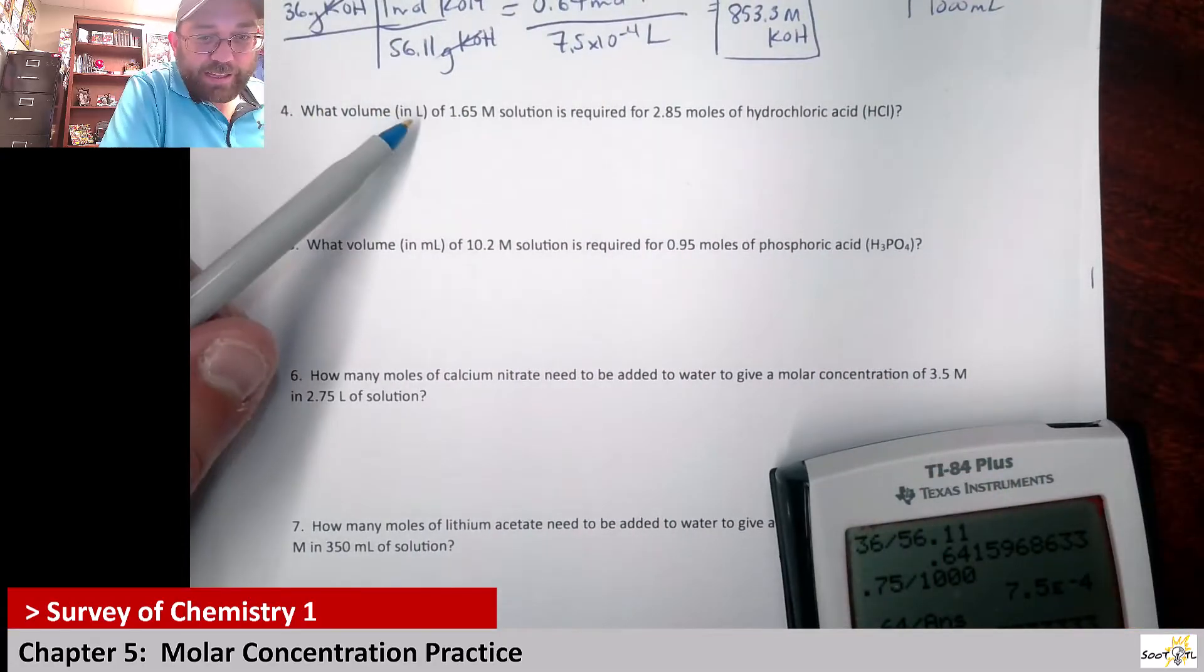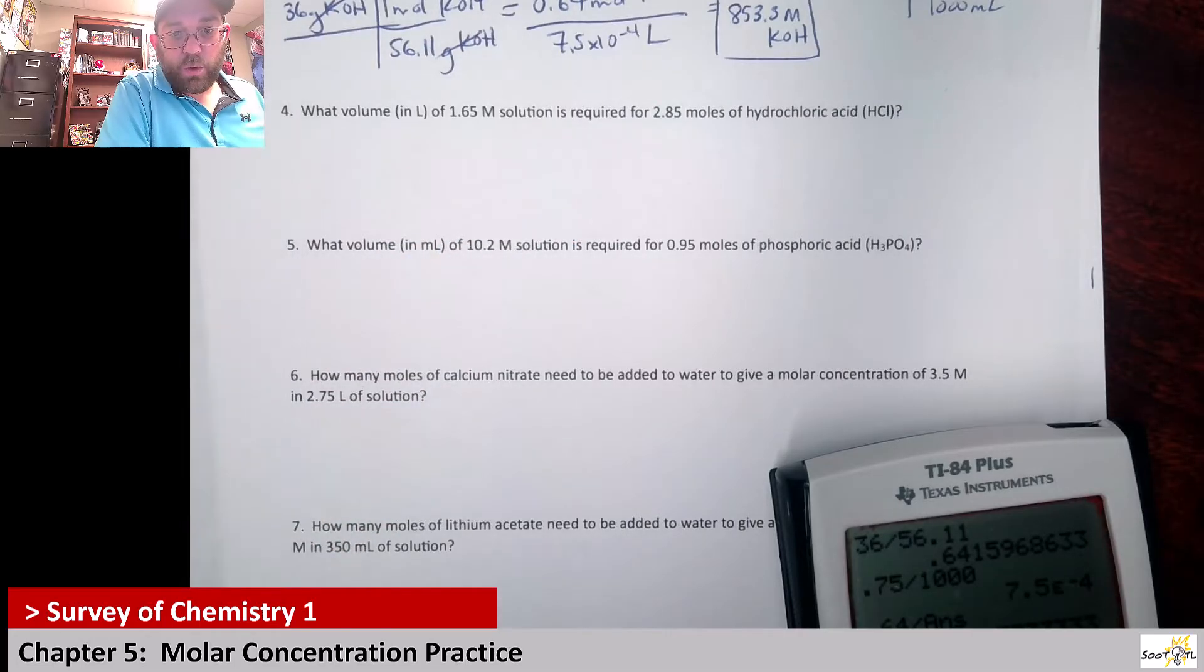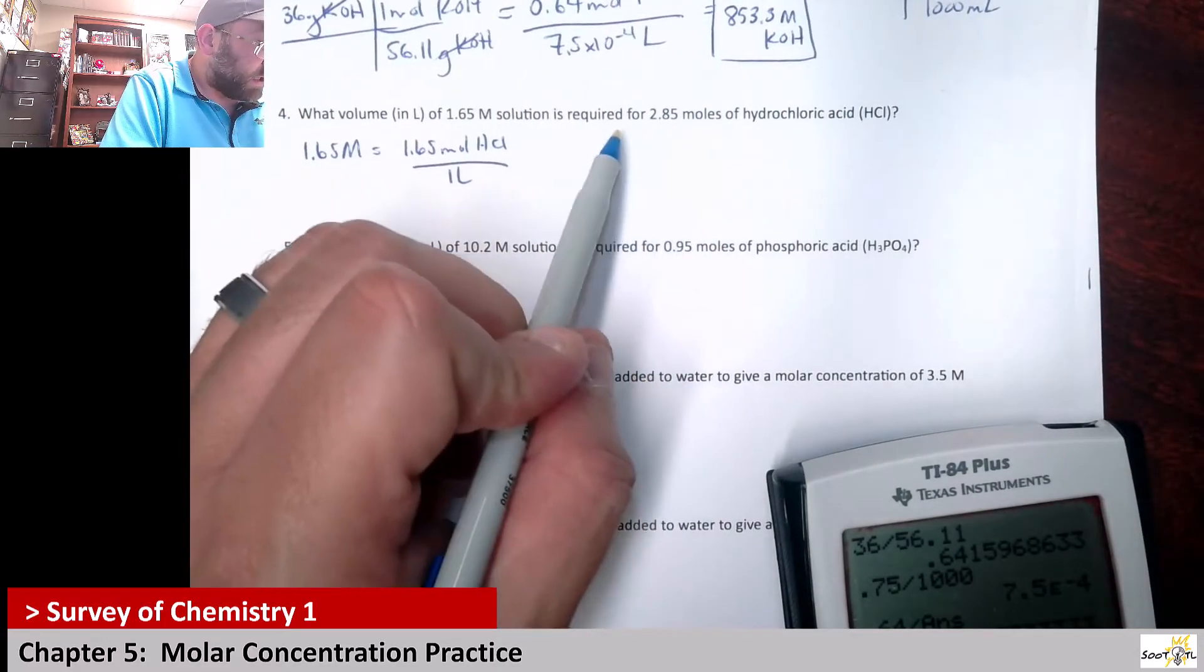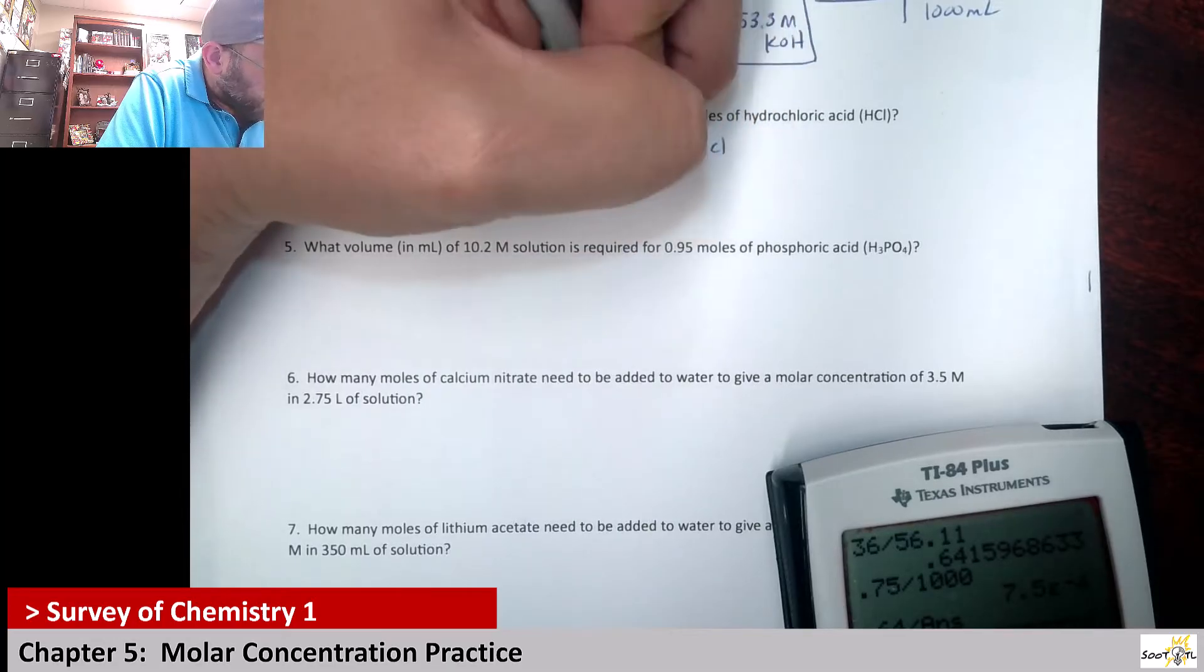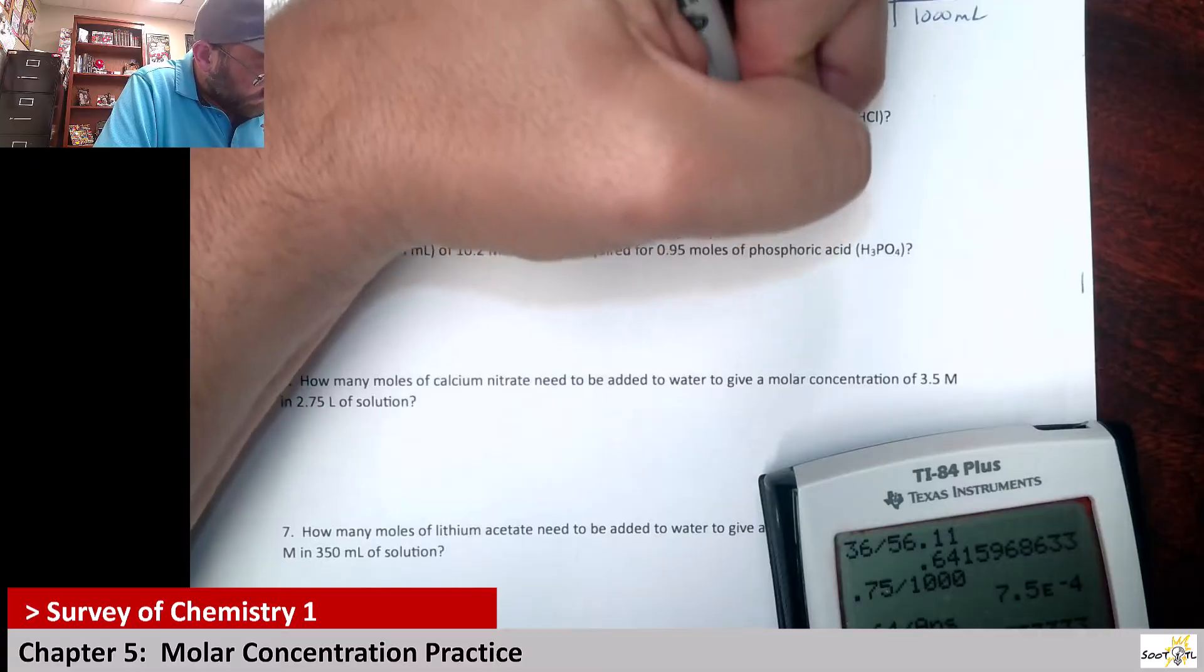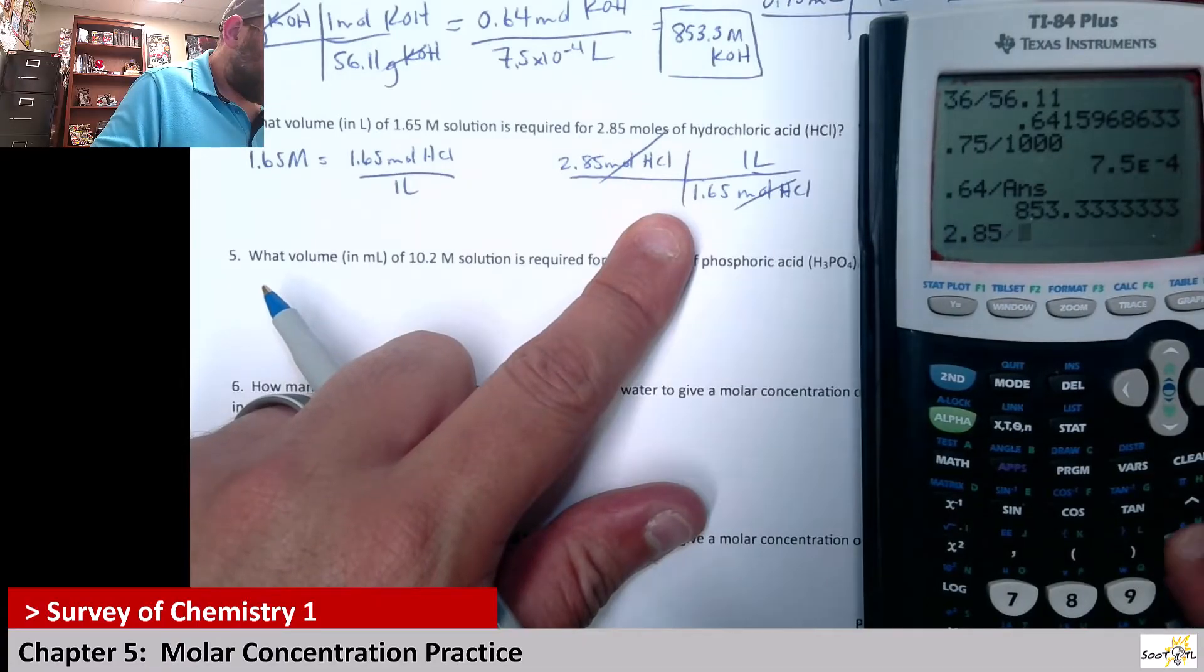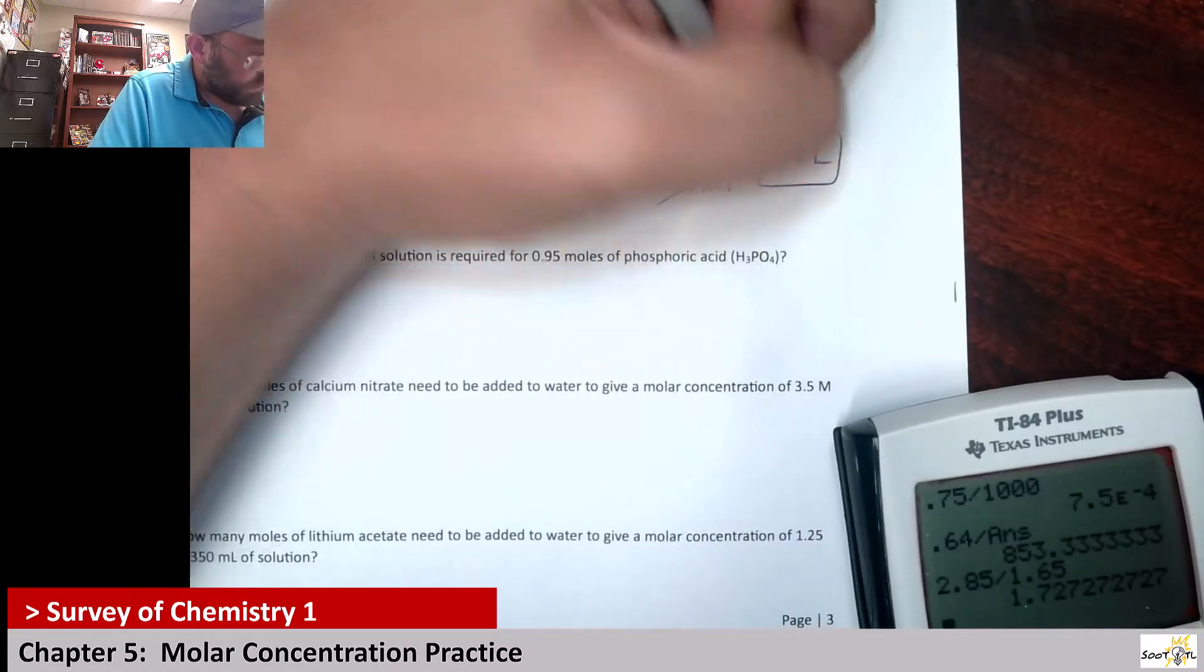Number four. What volume in liters of a 1.65 molar solution is required for 2.85 moles of hydrochloric acid, HCl? So we know that if it's 1.65 molar, that's the same thing as saying there's 1.65 moles of HCl for every 1 liter of solution. If we have 2.85 moles of HCl, to know what volume we need to make this concentration, you're really just going to be taking this concentration and flipping it. You have 1.65 moles of HCl for every 1 liter. Doing it this way allows it to cancel. So you're saying 2.85 divided by the 1.65, and you get 1.73. So that would be 1.73 liters.